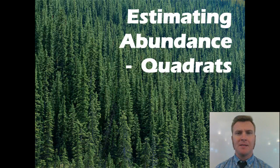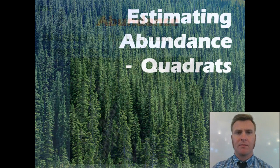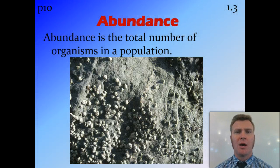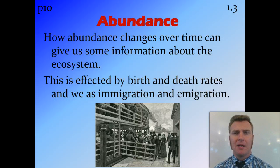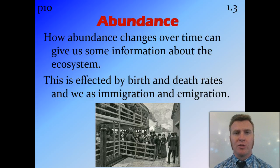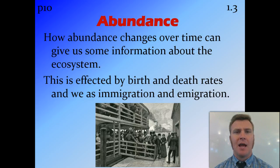In this video we're going to look at abundance, and in particular estimating abundance using quadrats. Abundance is the total number of organisms in a population — just how many things there are. How it changes over time gives us information about the ecosystem. Abundance is affected by birth rate and death rate, as well as immigration — extra numbers coming into an area — and emigration — numbers going out of an area.